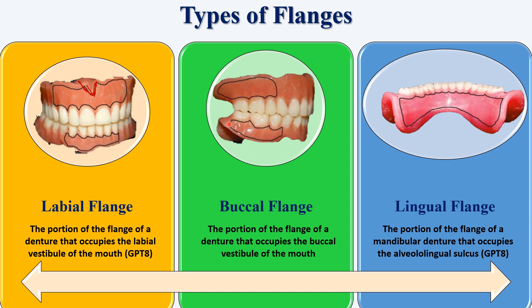Then we have the buccal flange area — towards the molar areas. It is the portion of the flange of a denture that occupies the buccal vestibule. Here also, we have to give space for the many muscles, which we will learn when we cover anatomical landmarks. Then we have the lingual flange area, which is for the mandible — the portion of the flange of a mandibular denture that occupies the alveolingual sulcus. That is also the GPT-8 definition.